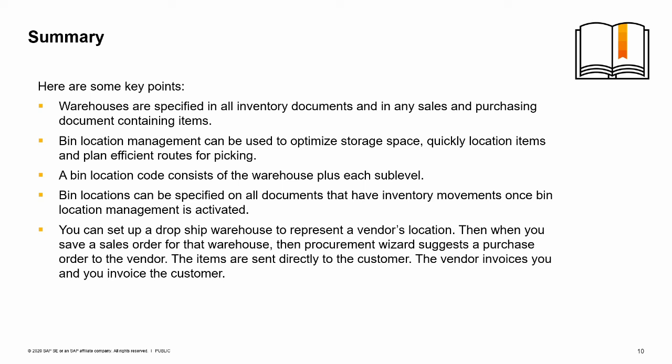You can set up a drop ship warehouse to represent a vendor's location. When you save a sales order with a product from the drop ship warehouse, the procurement confirmation automatically suggests creating a purchase order to the vendor. The items are sent directly to the customer from the vendor. The vendor invoices you for the cost of the product, and you invoice the customer for the sales amount.